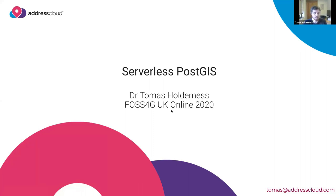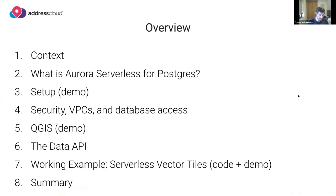Here's an overview of the demo presentation. I'm going to give you context on why we need a serverless database, then dive into Amazon Aurora Serverless for Postgres. I'll show a quick whistle-stop tour of how you'd set up a demo, talk about security, VPCs, and database access, then give a demo of connecting to the database using QGIS. We'll also look at the Data API — technology from Amazon that allows you to connect without managing Postgres connections — and show a working example using serverless vector tiles.